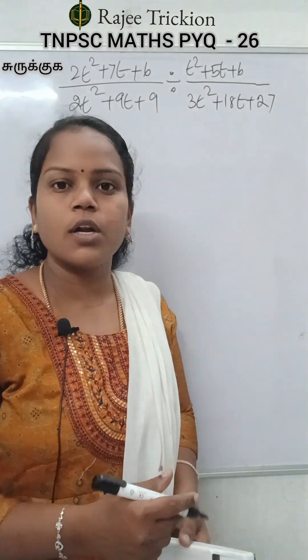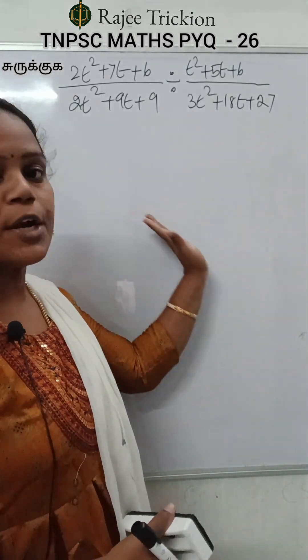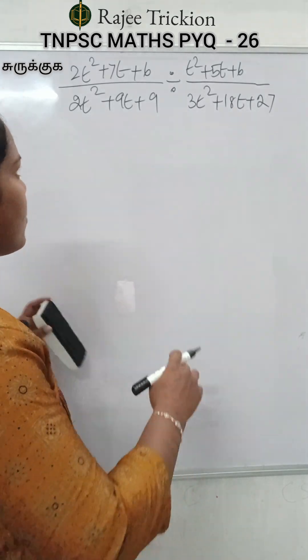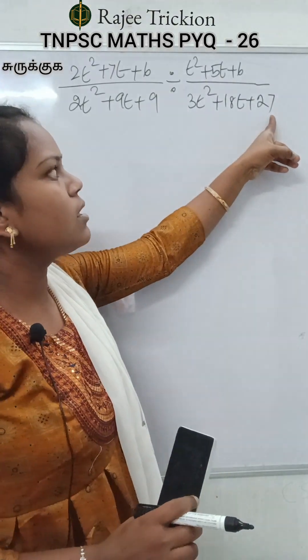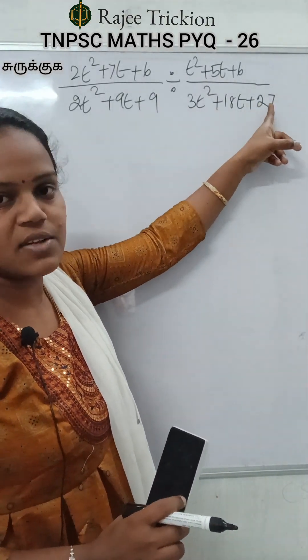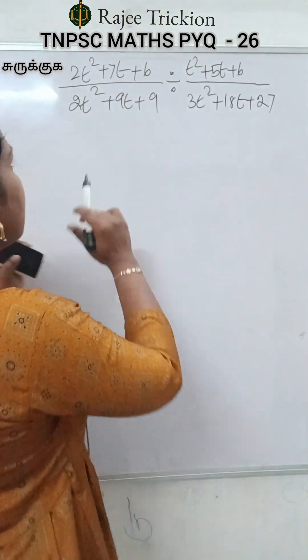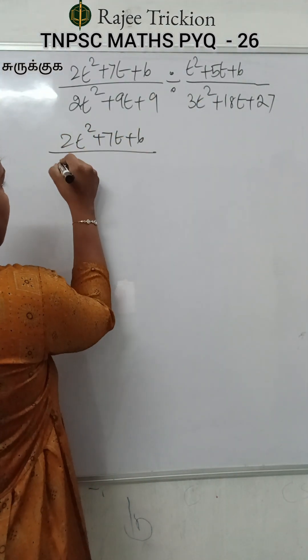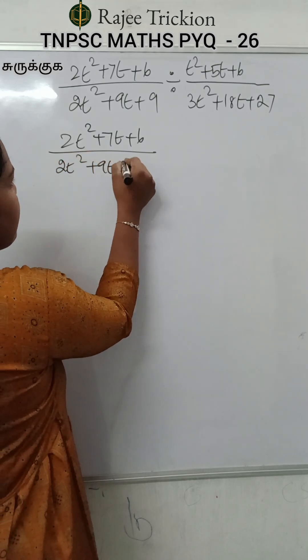It is very easy to get marks. So this is how you can get marks. So we're going to solve this: 2t square plus 7t plus 6 divided by 2t square plus 9t plus 9.